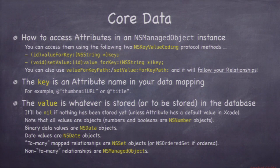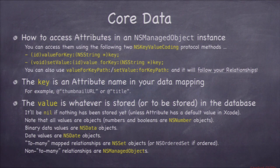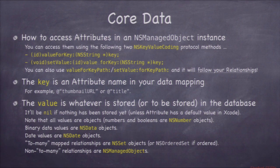How do I set those attributes? You use the key-value coding protocol — which you've already used. It's valueForKey, setValue:forKey, valueForKeyPath, and setValueForKeyPath. NSManagedObject implements all of these. You say setValue: whatever you want, forKey: @"title" to set the value of the title. The key is a string — the name of the property in your visual map. The value is an object like NSString, NSDate, NSData, or whatever the type is.